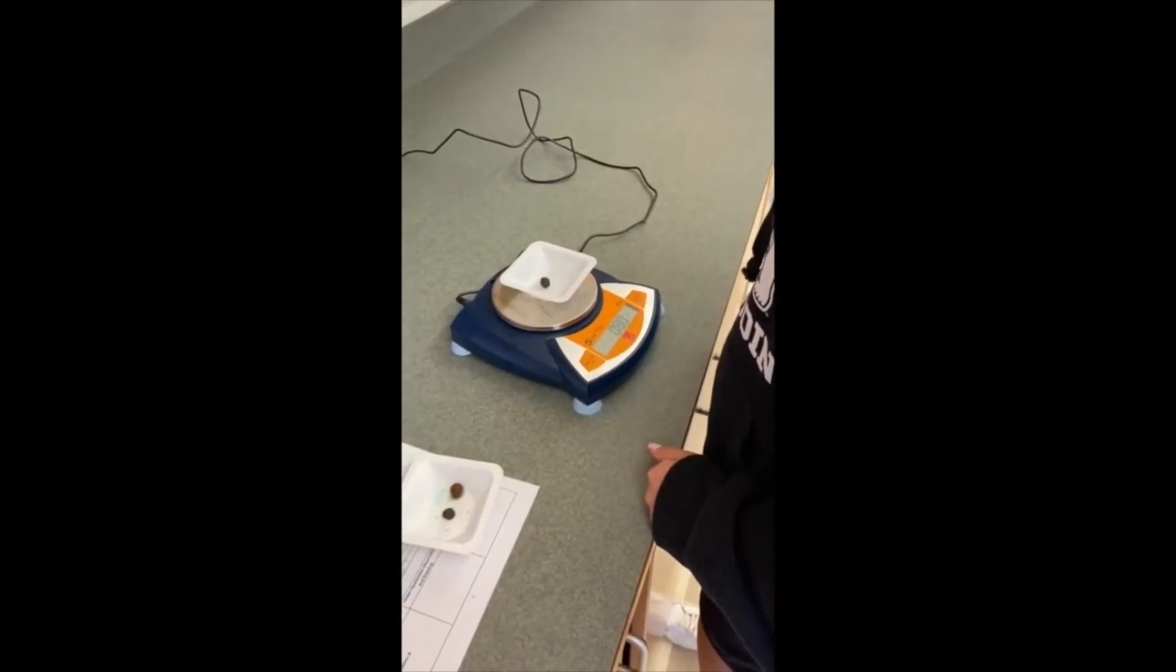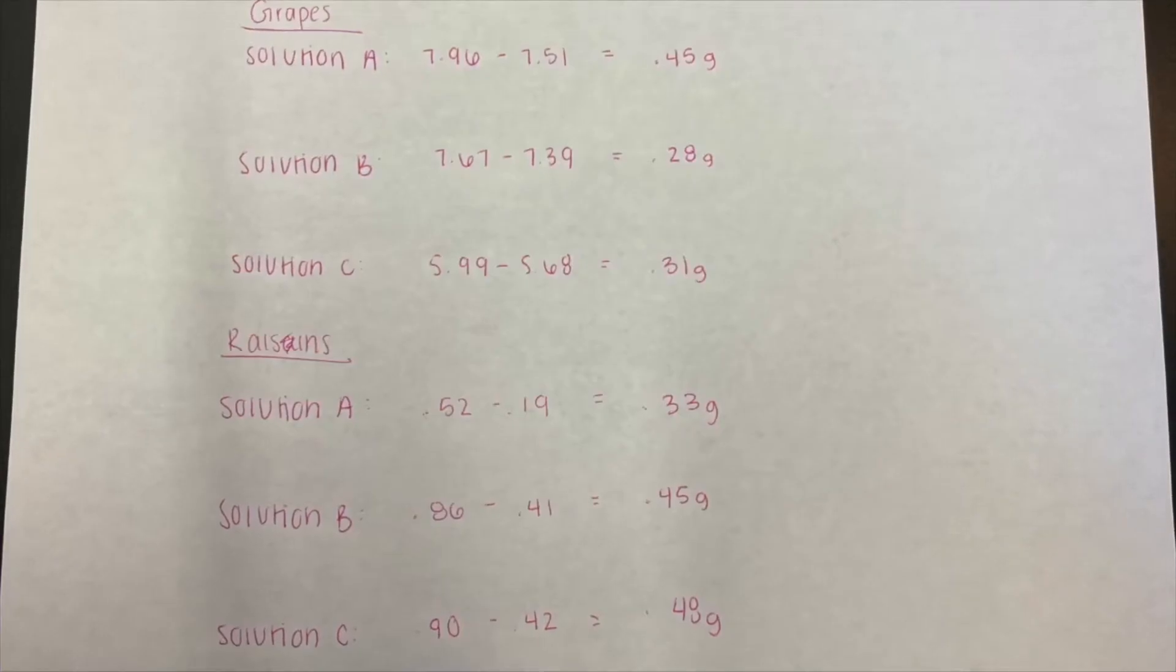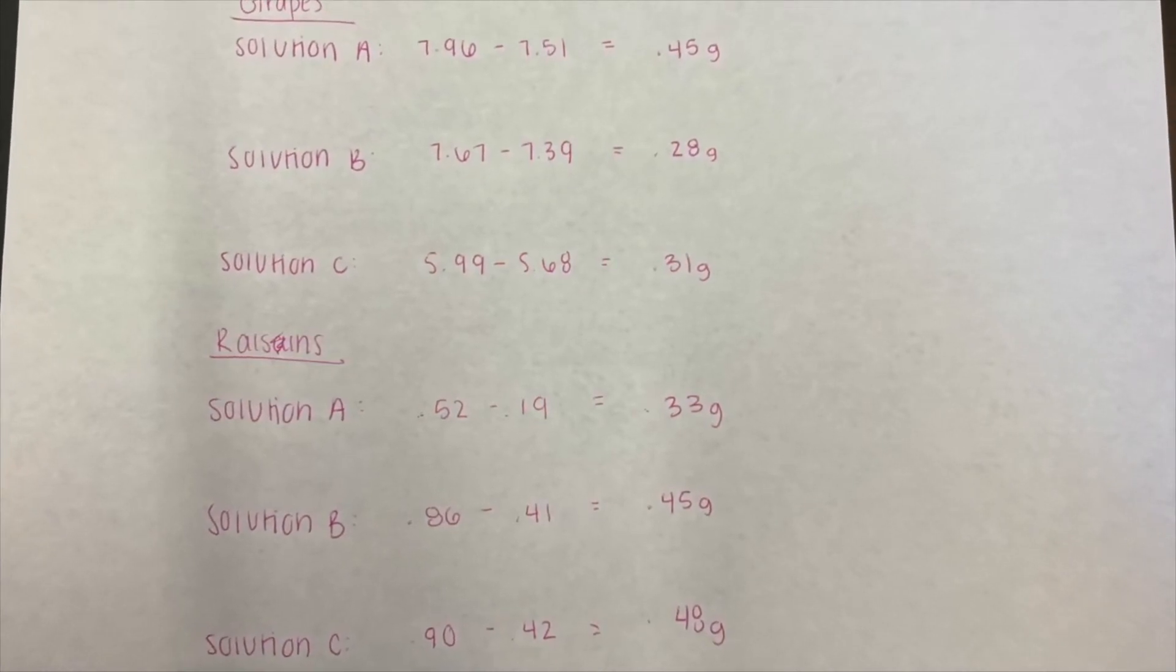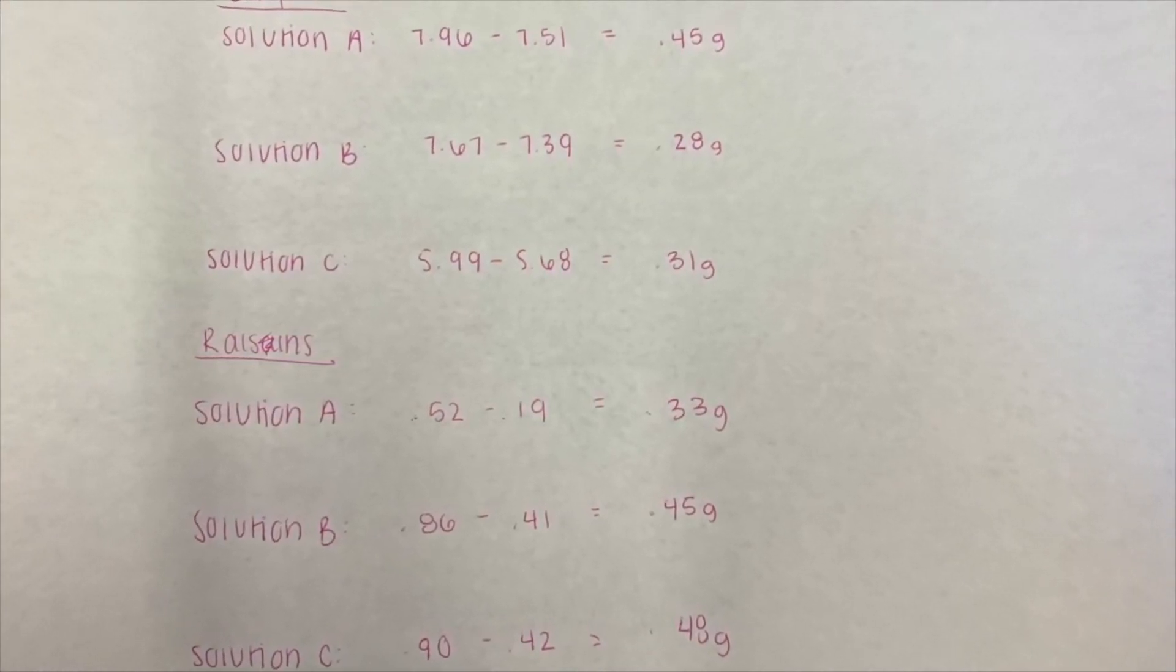Next, you will do calculations. The first calculation is finding the difference. You will do this by taking the final mass and subtracting it by the initial mass.